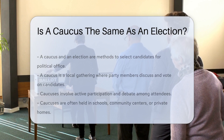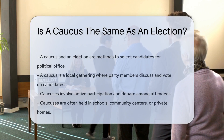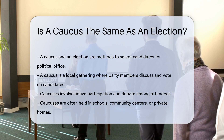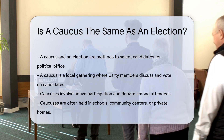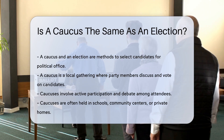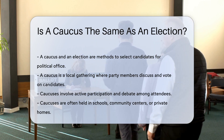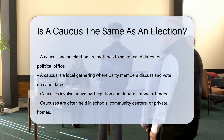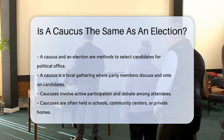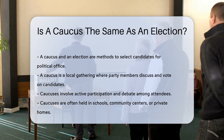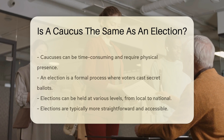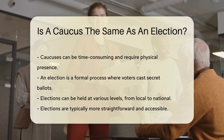A caucus and an election are both methods to select candidates for political office. However, they operate differently. A caucus is a local gathering where party members discuss and vote on candidates. It involves active participation and debate among attendees. Caucuses are often held in schools, community centers, or private homes. They can be time-consuming and require a physical presence.